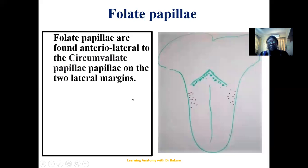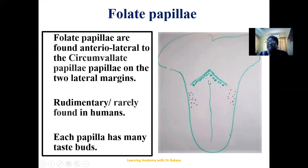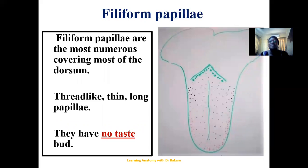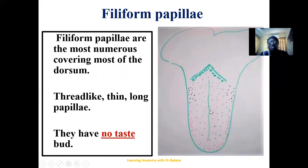The foliate papillae are located anterolateral to the circumvallate papillae. This type of papillae is rudimentary in humans and not well developed — they are more prominent in animals like rats or rabbits. Each of them contains many taste buds. The filiform papillae fill the entire anterior dorsum of the tongue; they are numerous and well distributed across the whole region. However, these papillae do not have taste buds within them.